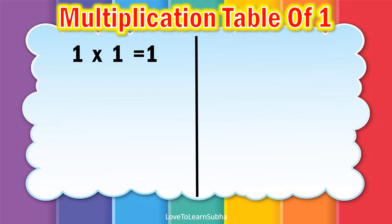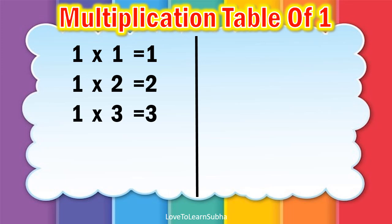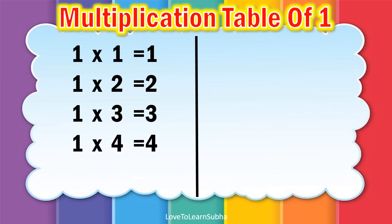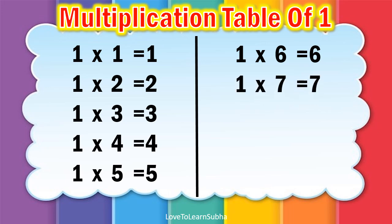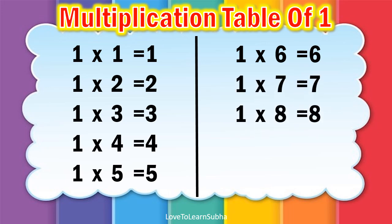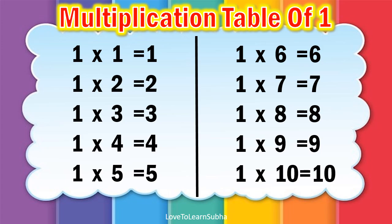1 1s are 1, 1 2s are 2, 1 3s are 3, 1 4s are 4, 1 5s are 5, 1 6s are 6, 1 7s are 7, 1 8s are 8, 1 9s are 9, 1 10s are 10.